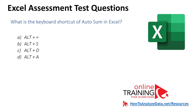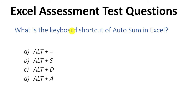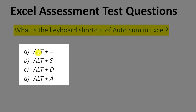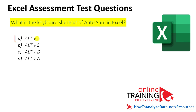You will often be tested on your knowledge of Excel keyboard shortcuts. What is the keyboard shortcut for AutoSum in Excel? Four choices are presented: Alt+Equal, Alt+S, Alt+D, and Alt+A. Keep in mind the plus sign just indicates two keys are pressed together — Alt and another key, such as the equal sign. With that in mind, what do you think is the right answer?